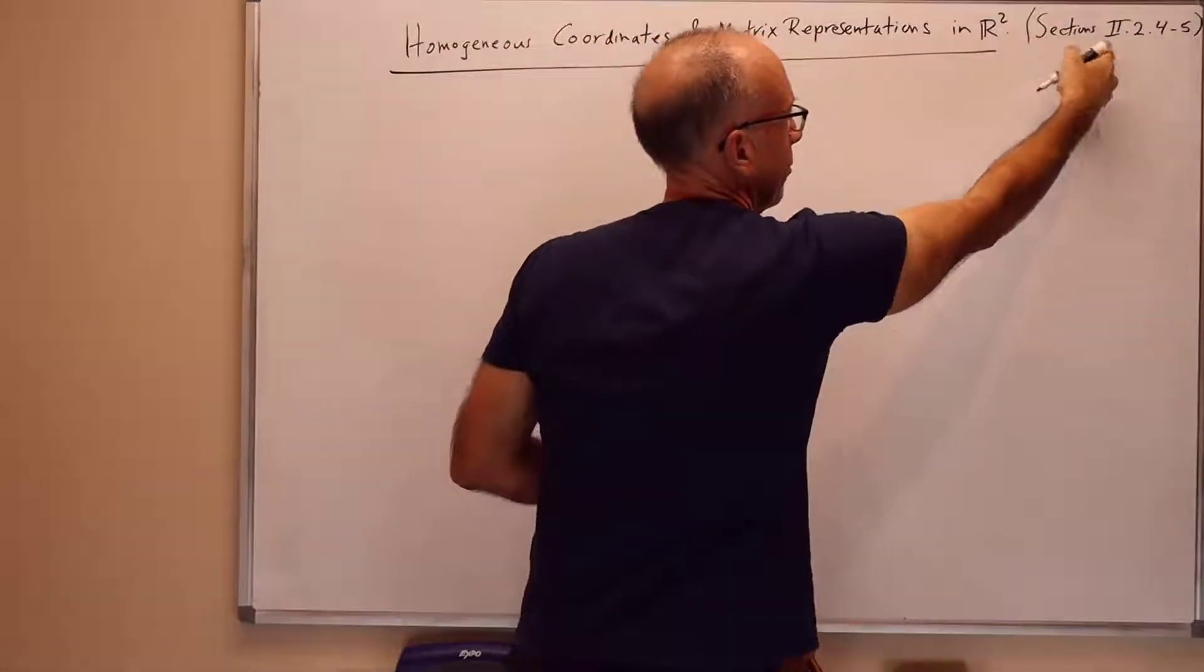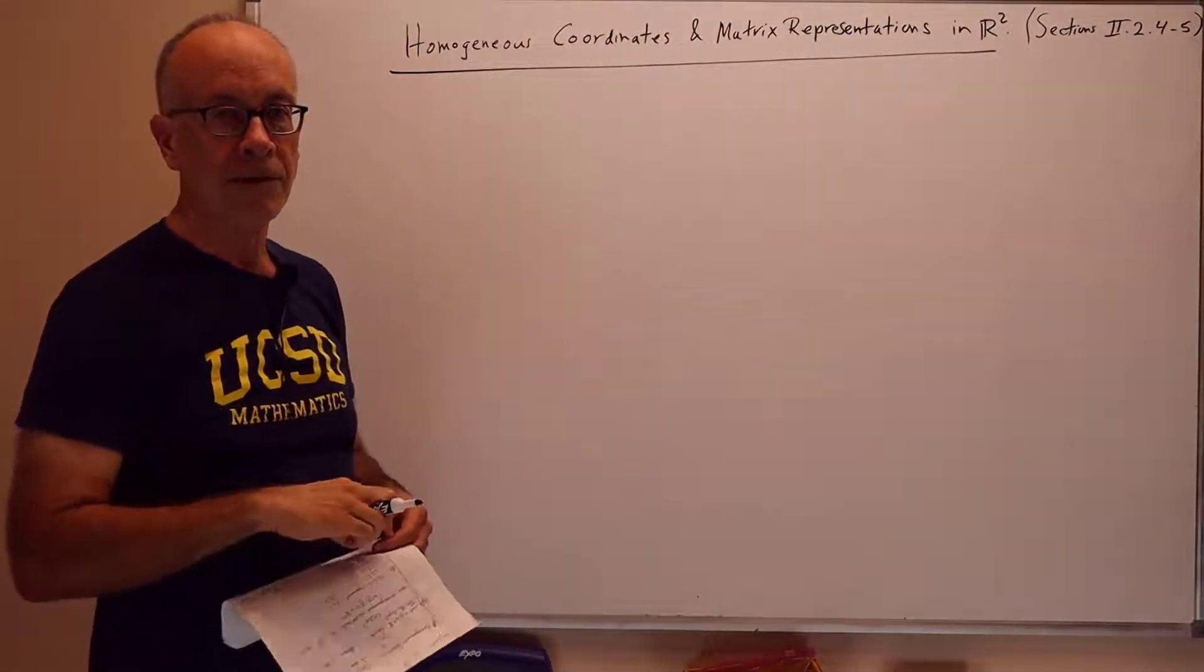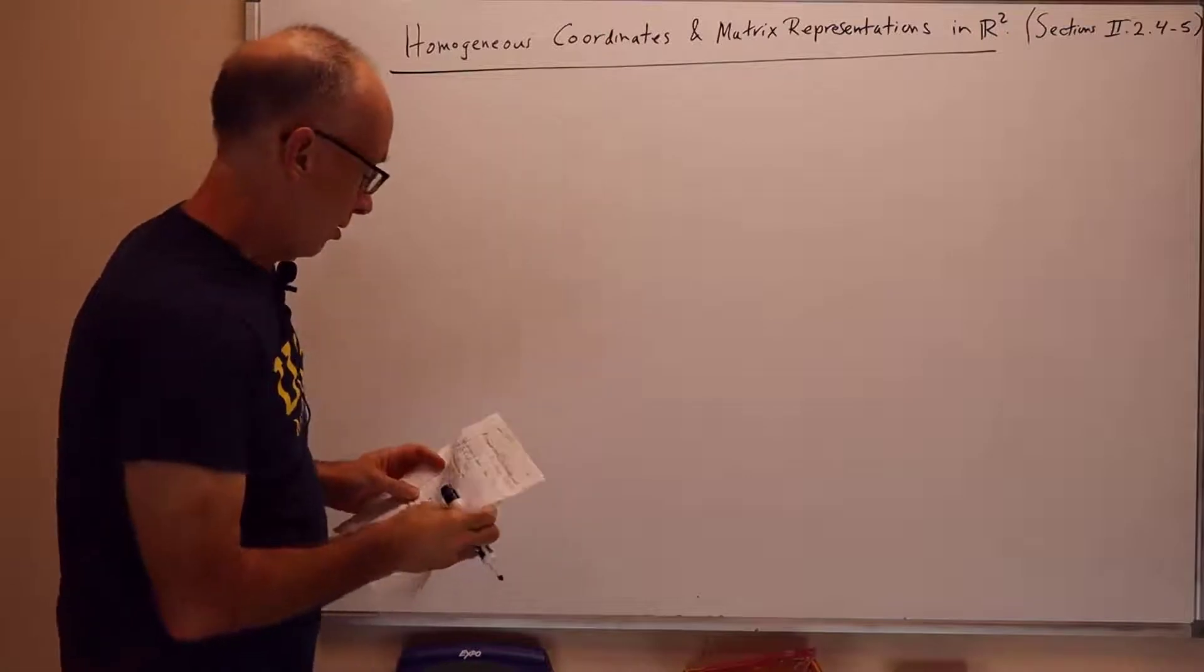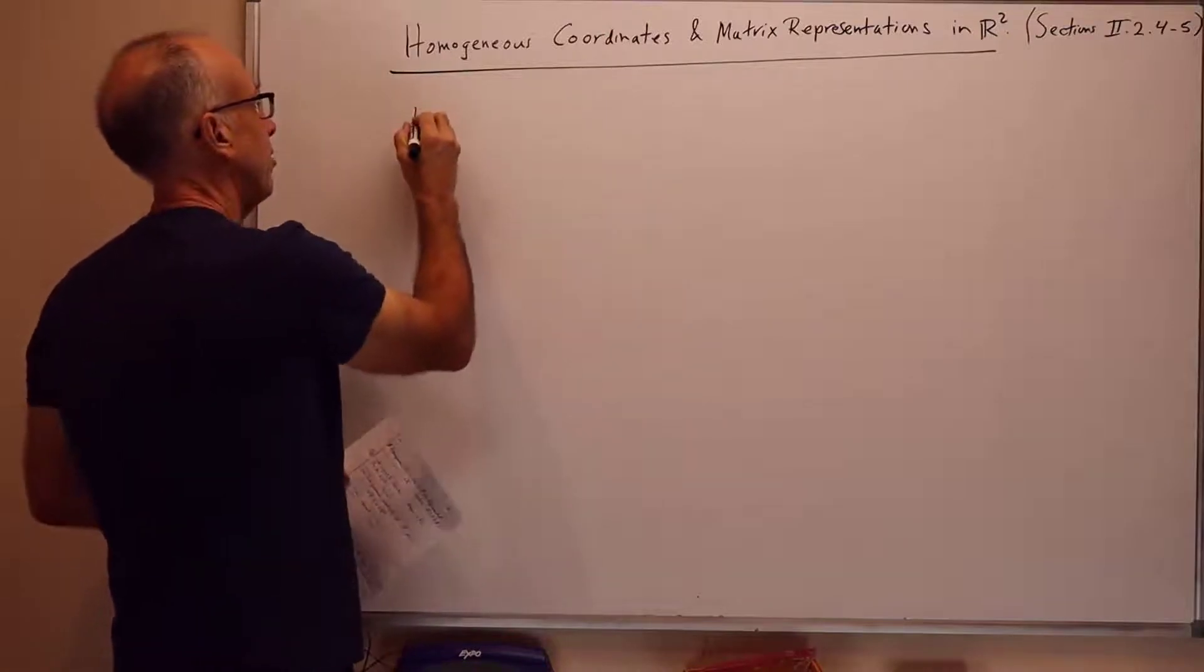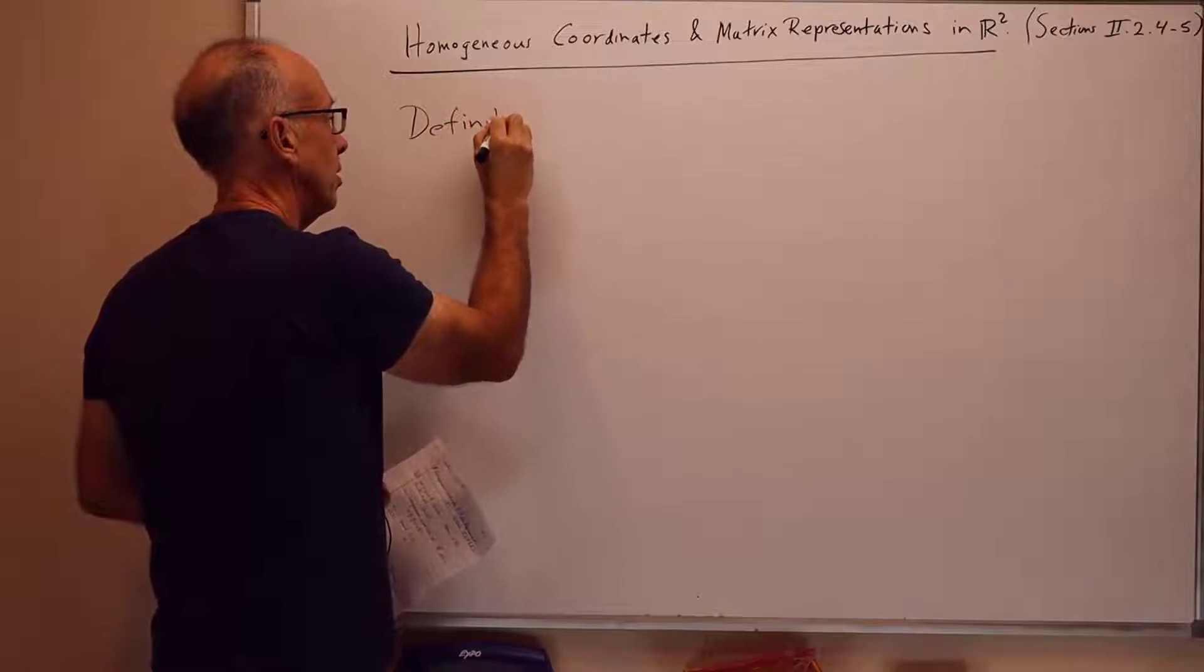This is taken from sections 2.2.4 and 2.2.5 in the PDF of the textbook online, so you can also read about it there. But let's start off with homogeneous coordinates, and we're working in R2 at the moment, in two-space.